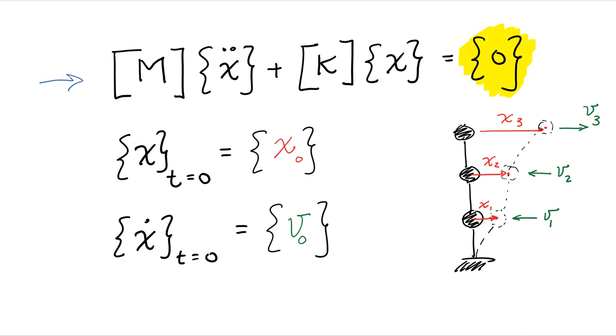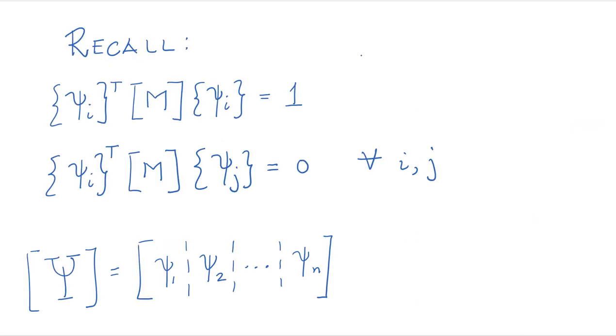And so those are what we call initial conditions. So we want to determine how are these degrees of freedom going to evolve in time under these initial displacements and velocities. The first thing we're going to do is we're going to use modal analysis to solve this problem.